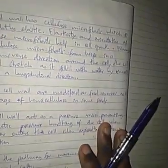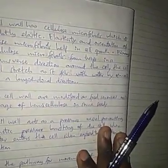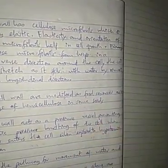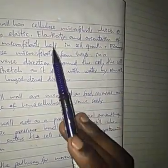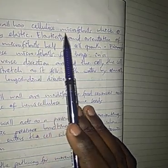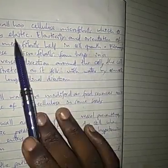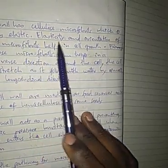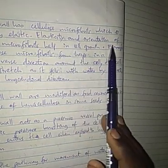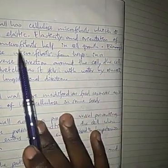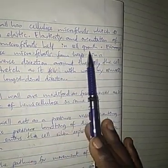The cell wall develops a coat of wax — cutin — on the epidermal surface, which reduces water loss and the risk of dehydration, and reduces water loss by transpiration. It also helps control cell growth and shape because the direction in which cells are able to stretch is determined by the arrangement of cellulose microfibrils.